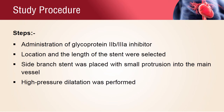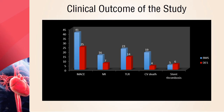The clinical outcome of the study was obtained after 5 years. The graph shows the variation between bare metal stent and drug eluting stent. Major adverse cardiac events, myocardial infarction, target lesion revascularization, and cardiovascular death were significantly lower in the drug eluting stents group than in the bare metal stents group, but there was a significant increase in stent thrombosis.